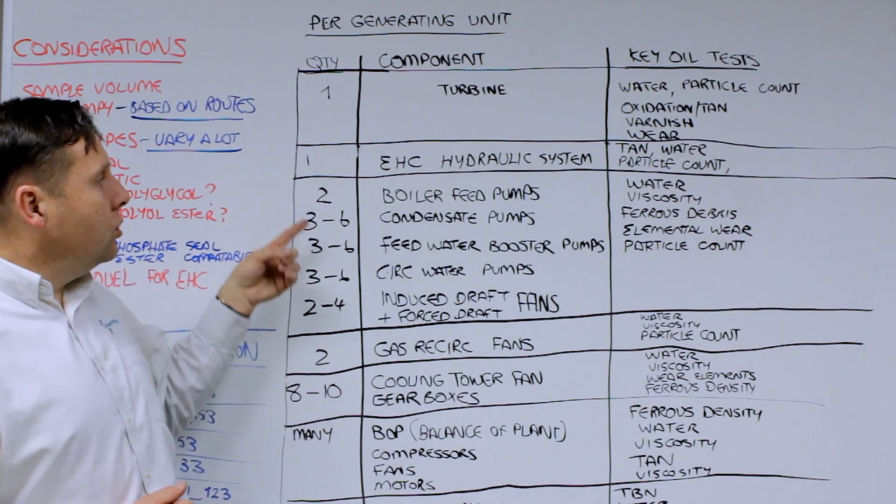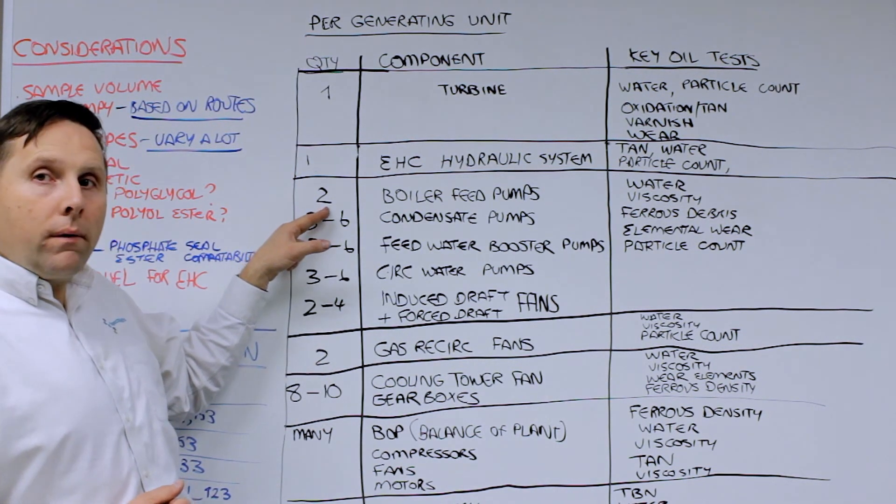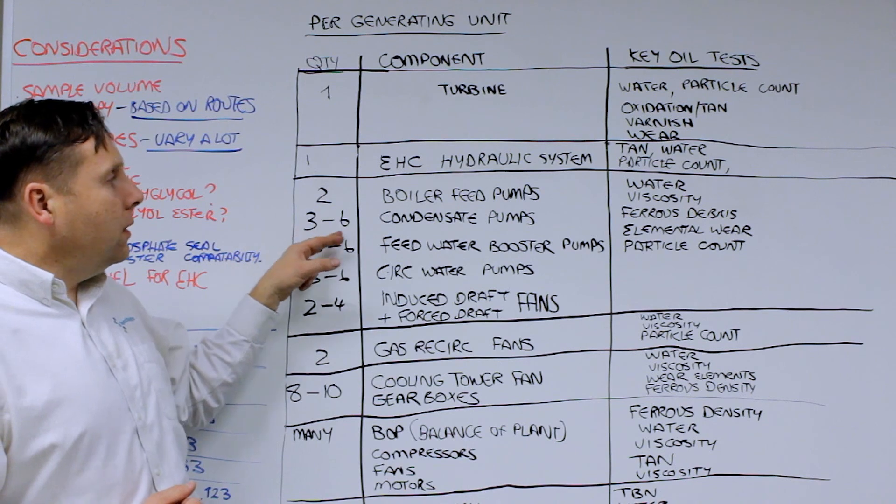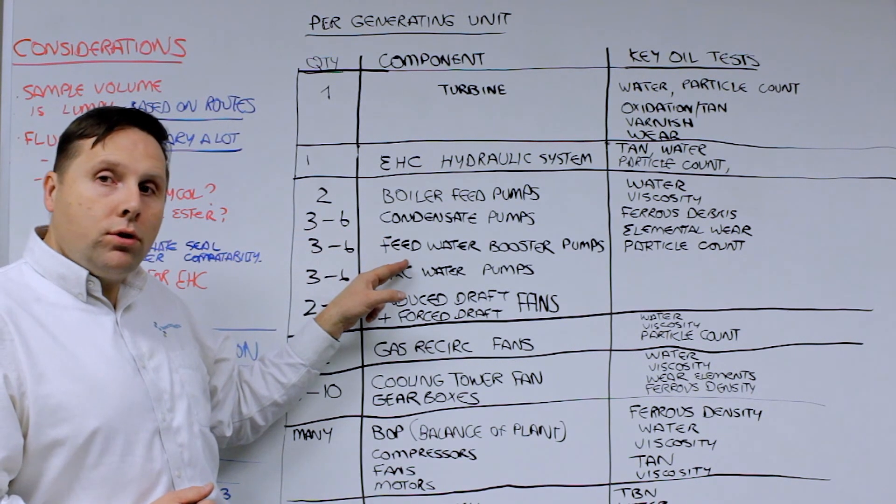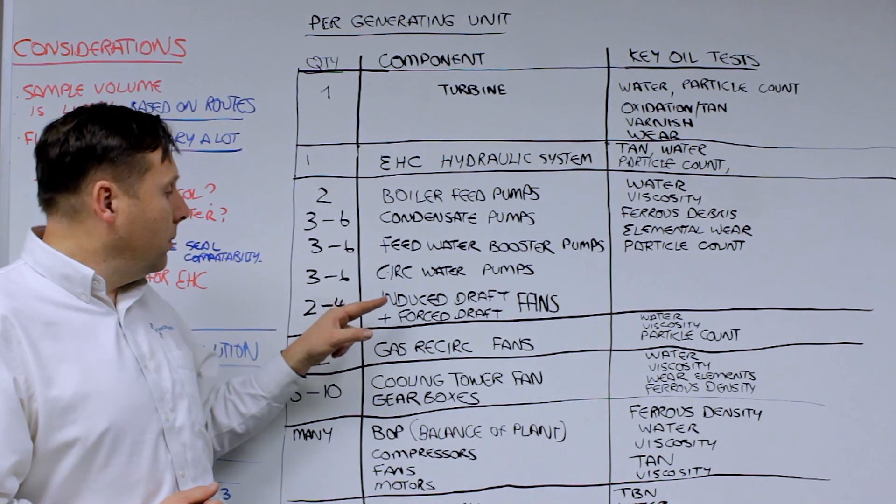And then on any one generating set, in addition to these singles, you can have up to two boiler feed pumps, you can have three to six condensate pumps, three to six feed water booster pumps, three to six circulating water pumps.